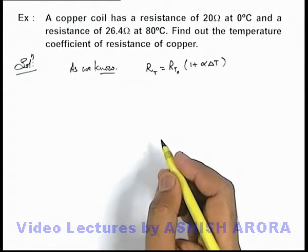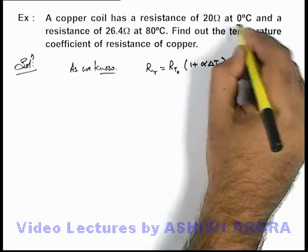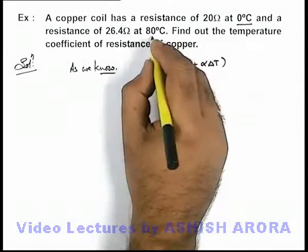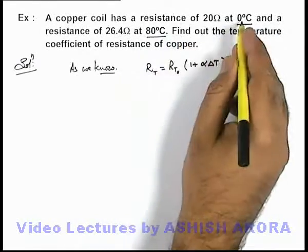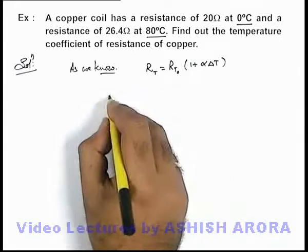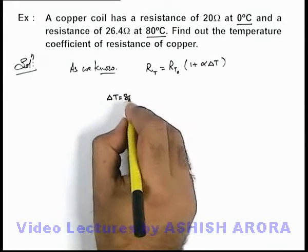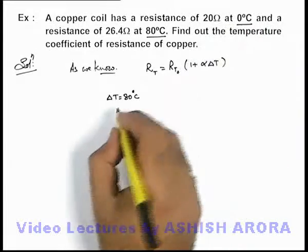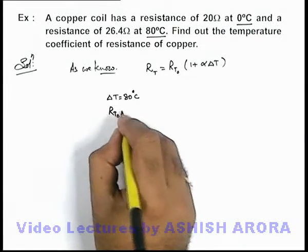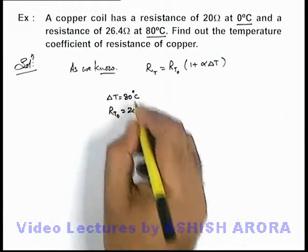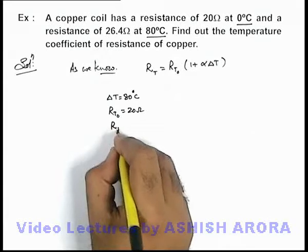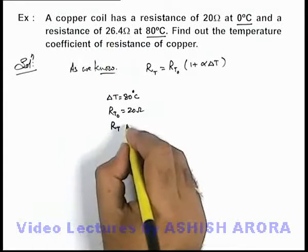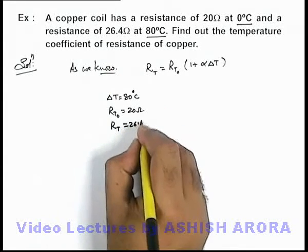Now in this situation, if we take the reference temperature at zero degree, then the difference with the 80 degree centigrade is 80, so here ∆T is equal to 80 degree centigrade. Reference temperature if we take at zero degree, then R_T0 we can write as 20 ohms, and resistance at temperature T, that is at 80 degree centigrade, is 26.4 ohms.